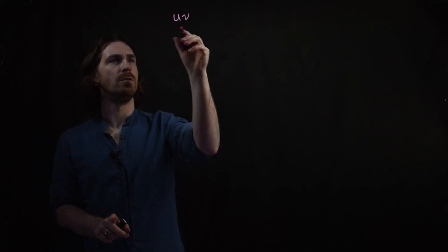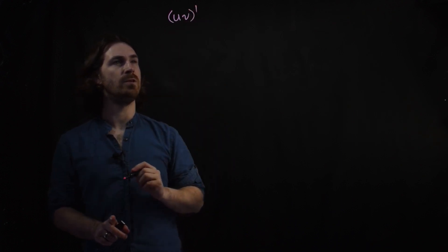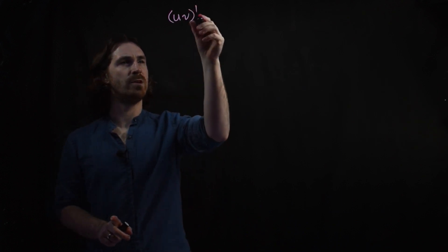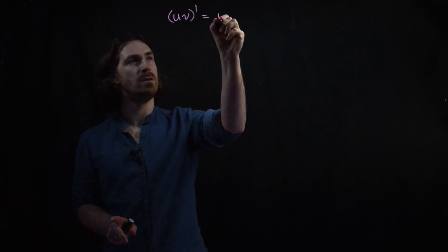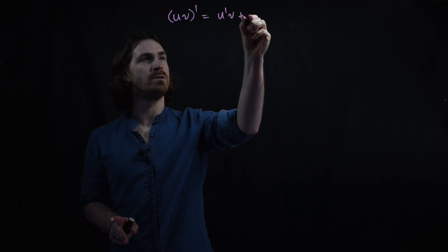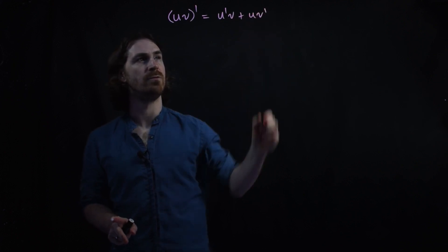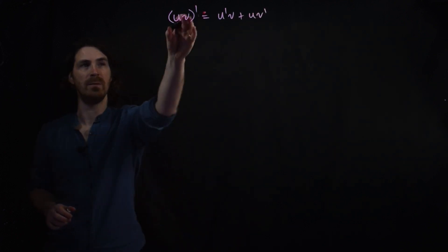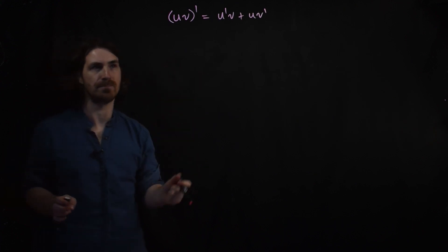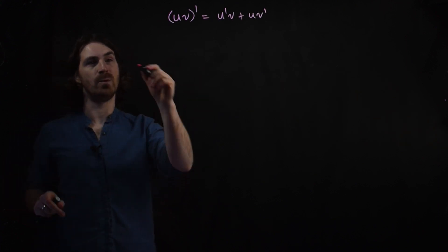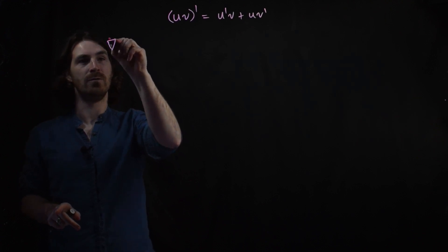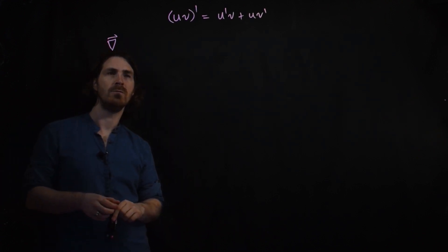If we have two variables u and v and we take the derivative of them, we know what the normal product rule is. It's the derivative of u times v plus u times the derivative of v. Prime means differentiate with respect to something. Now, how does this generalize when we involve our nabla operator?